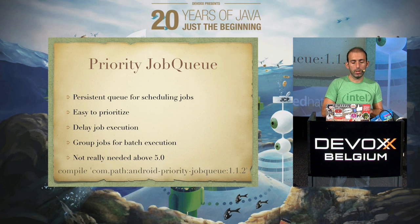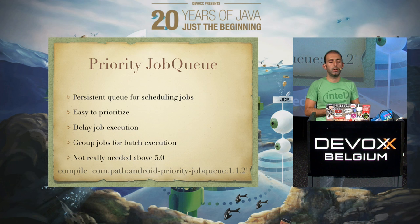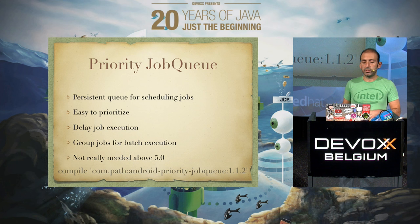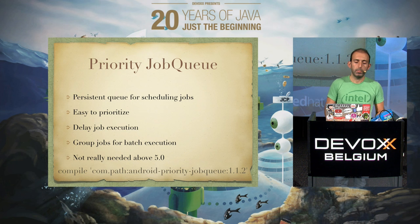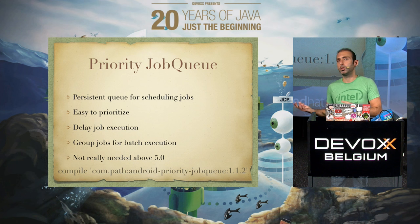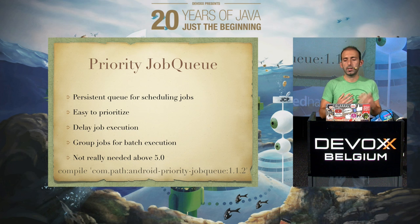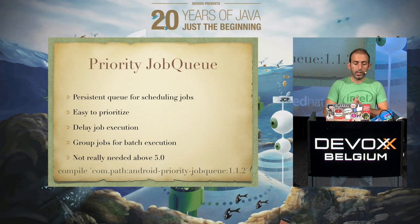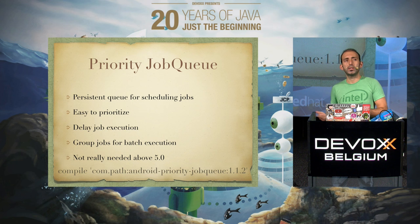It's a persistent queue, so it's really nice for scheduling and prioritizing jobs. You don't care if your application crashes or goes to sleep — each job is persistent and can be loaded back when your application is alive. It's very easy to prioritize tasks, so a task created after another can execute before it. You can delay job execution, and you can also group job tasks to execute in batch.